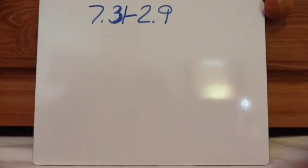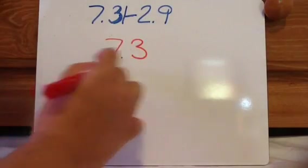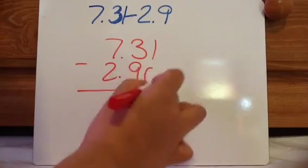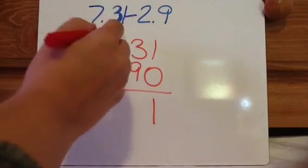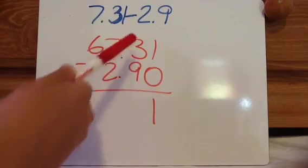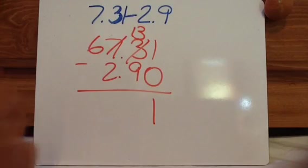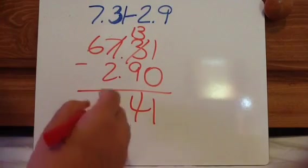Okay, 7.31 minus 2.9. Okay, fill it in. Now in this situation, it's easy. 1 minus 0 is 1. But then I can't do 3 minus 9. I have to borrow from the 7, so that becomes a 6. So that will become 13, 12, 11, 10, 9, 8, 7, 6, 5, 4. Remember to keep your decimal there. 6 minus 2 equals 4.